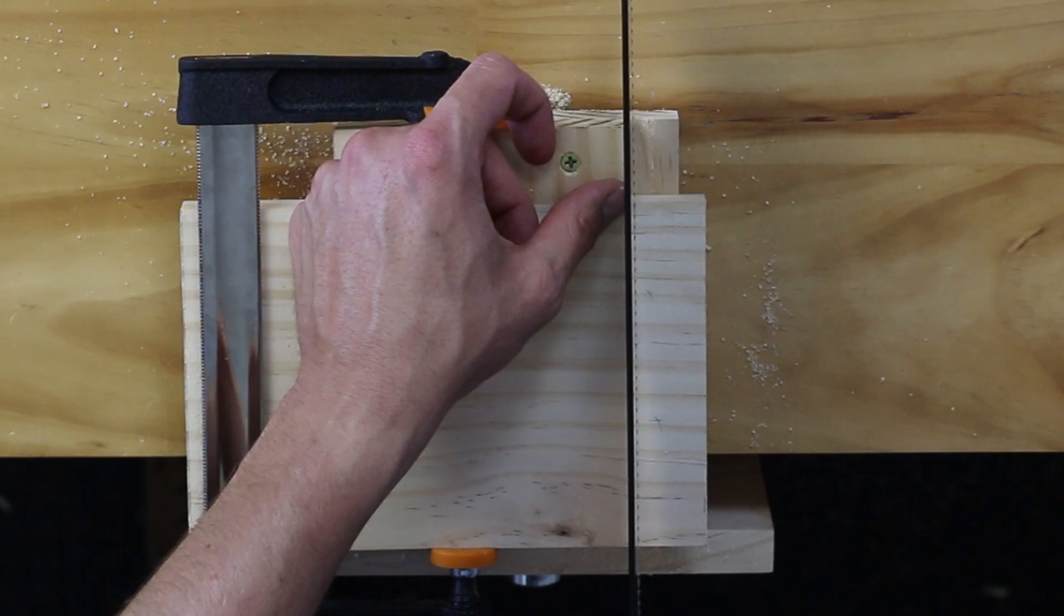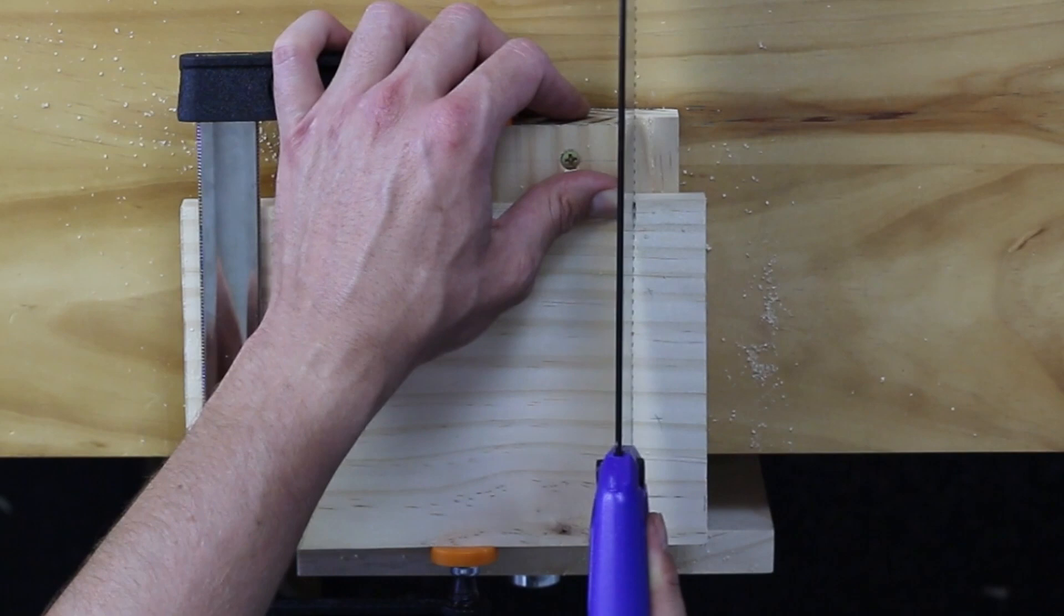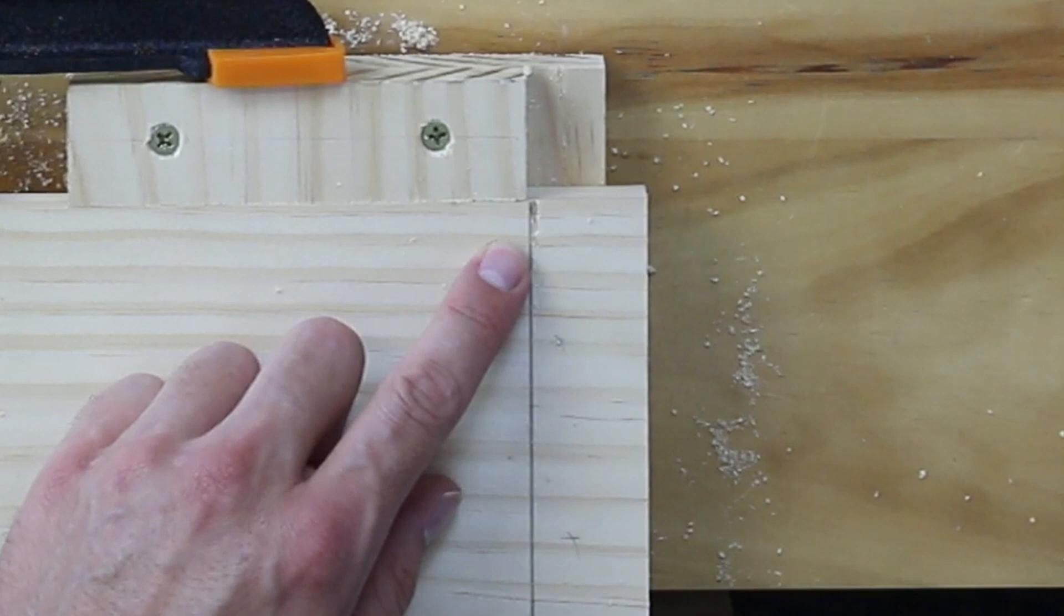From there, place your thumb up against the saw blade and the timber. This is going to act as a support. Your blade should be angled at about 30 degrees. After pulling back three times, you should have a notch.